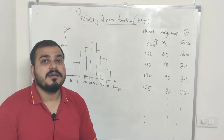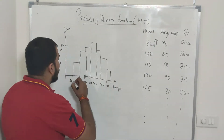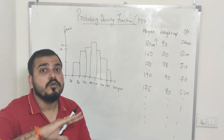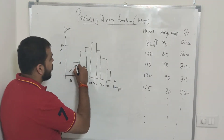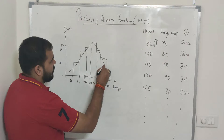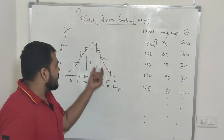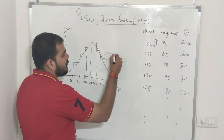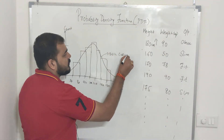Now if I want to convert this histogram into a probability density function, we are essentially smoothing the histogram. When we smooth the histogram we get a curve — something that resembles a bell curve.